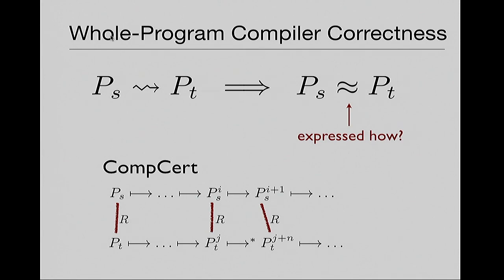The essential idea is: if I run the target program PT, then I'm going to see the same observable behavior — file opening, printing, whatever — as when I run the source program PS. More formally, you come up with a simulation relation between source and target programs, and you show that your initial programs are related by the relation. Then no matter how many steps you've taken, if your source and target are related and you take one step at the source, you can take zero or more steps at the target and they will still be related according to that same simulation relation.